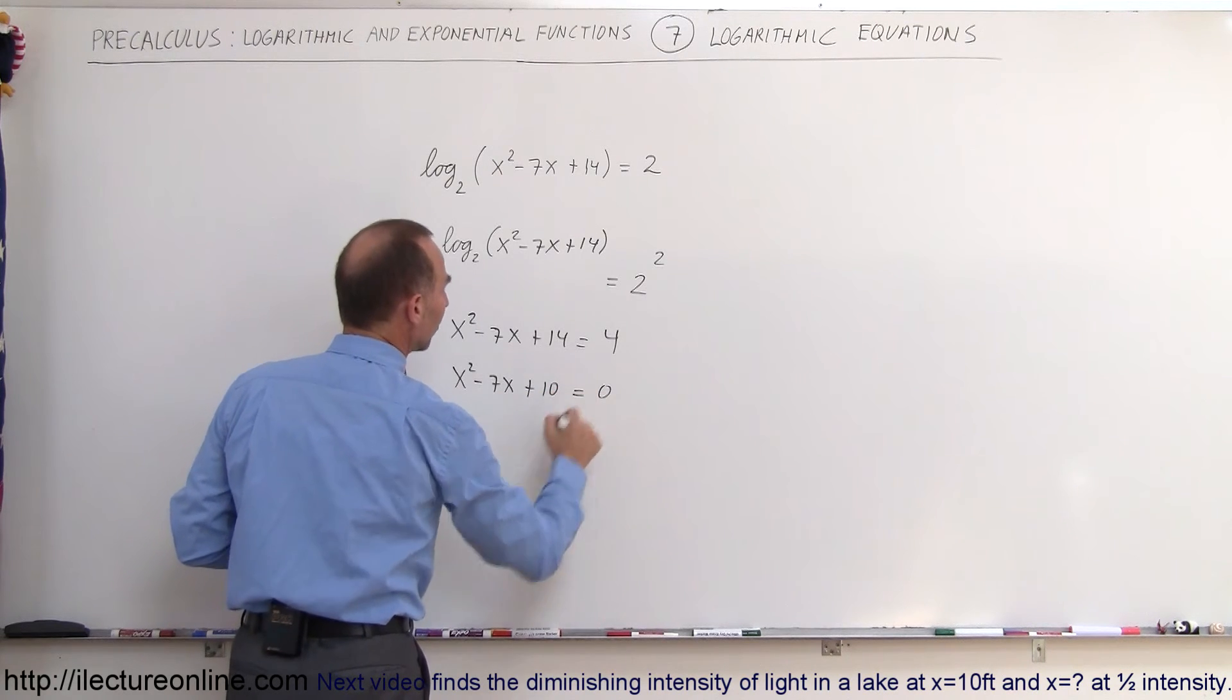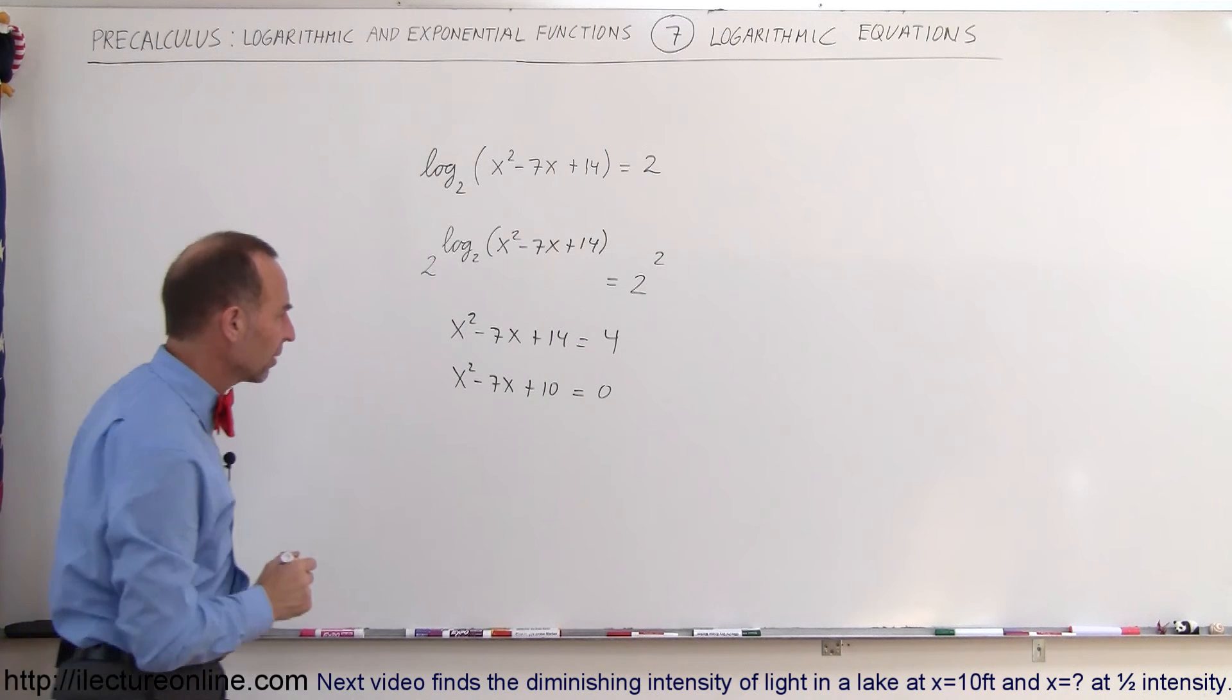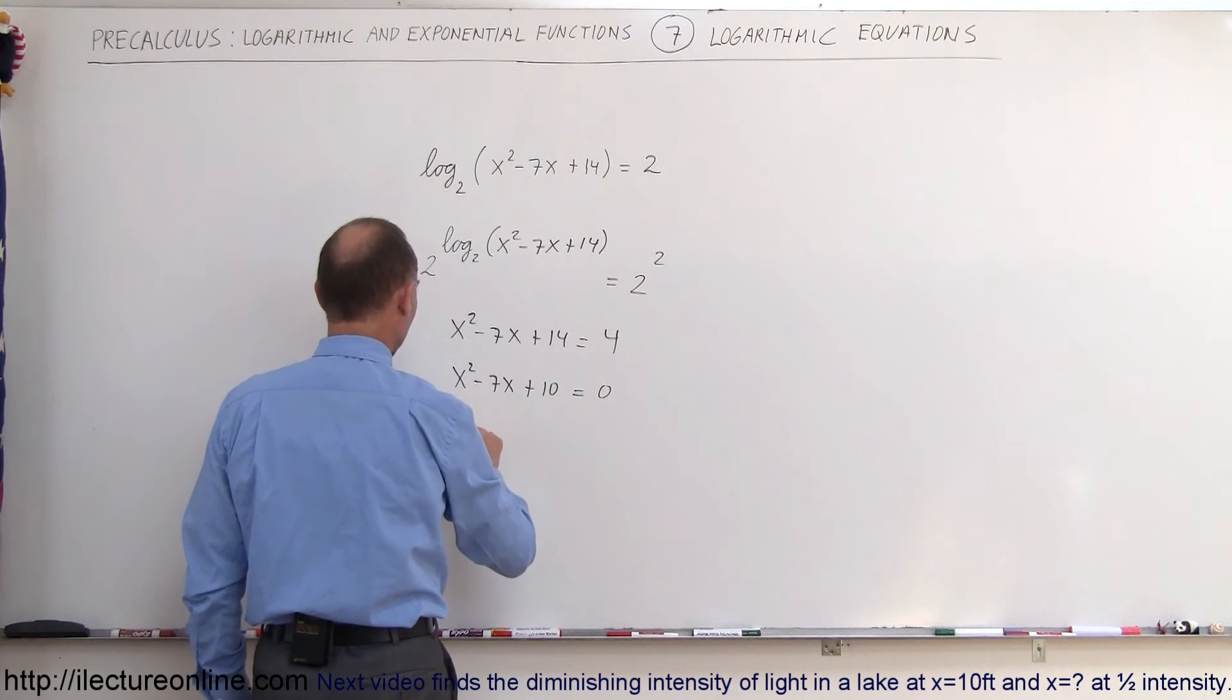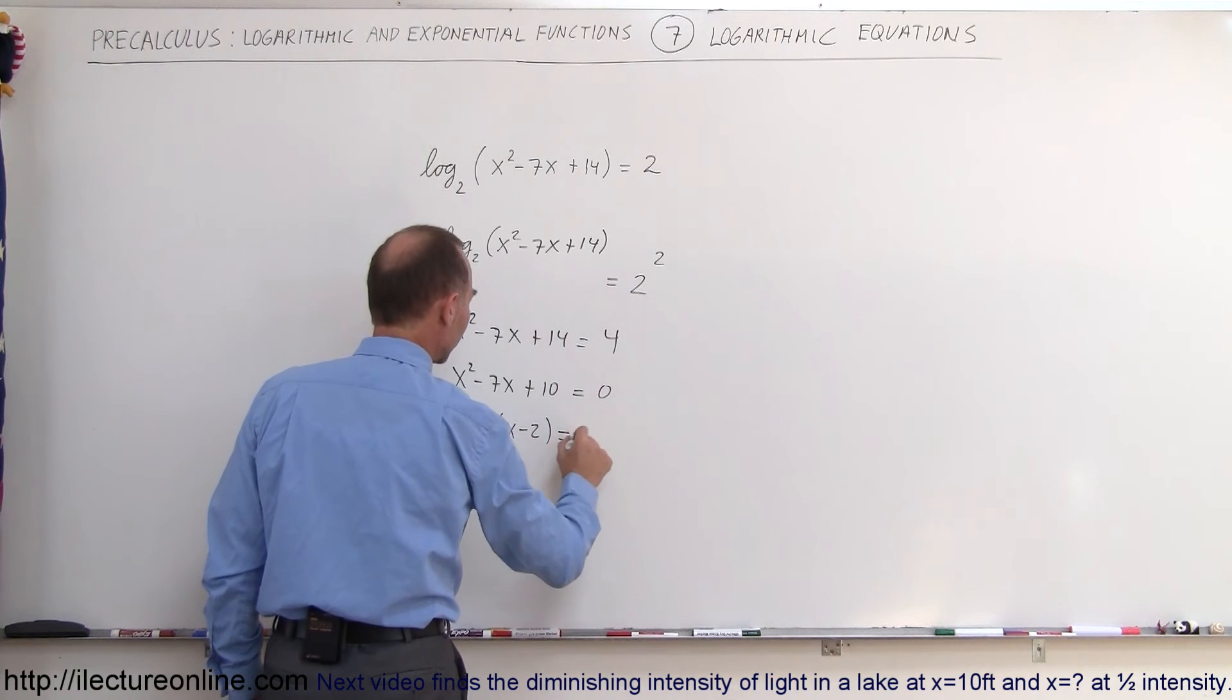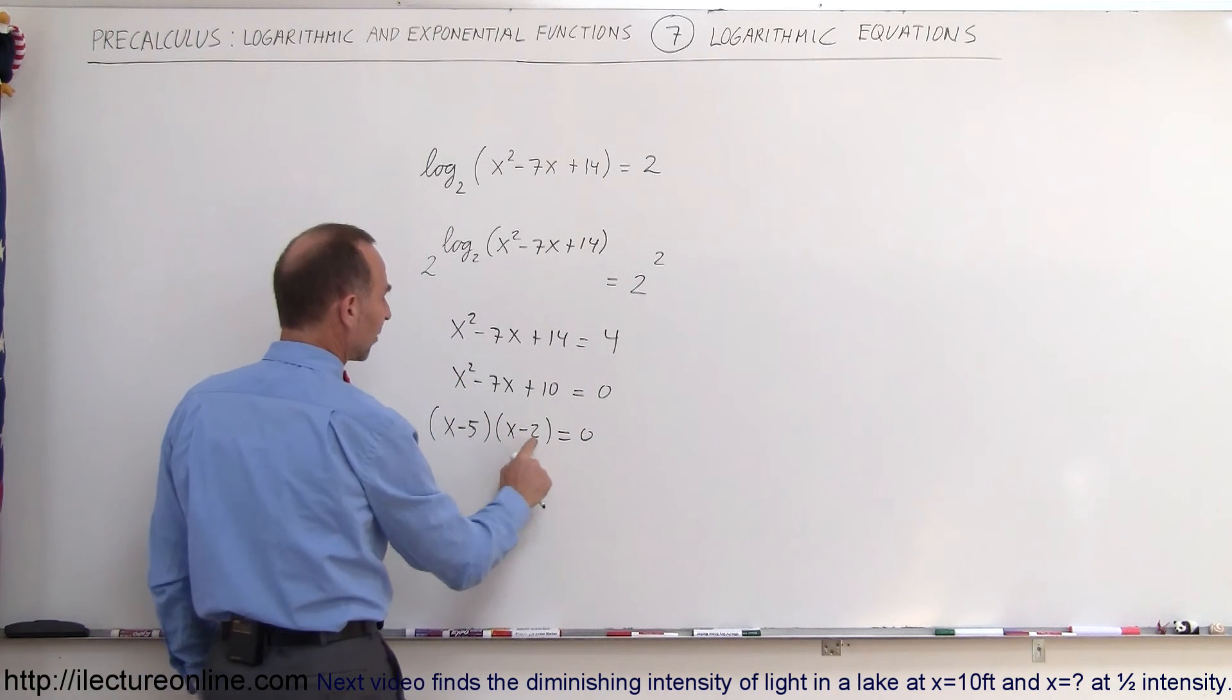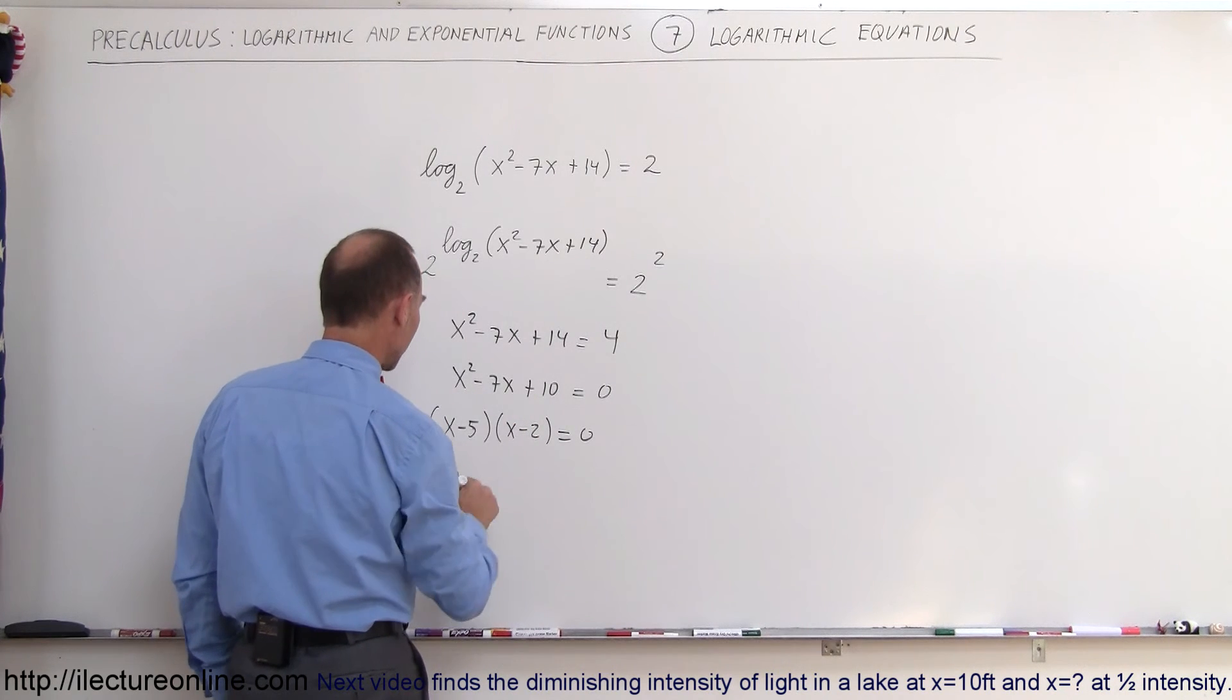Now we have a quadratic equation that we can solve. In this case, we can factor this: (x - 5)(x - 2) = 0, because -5 times -2 gives +10, and -5 minus 2 gives -7.